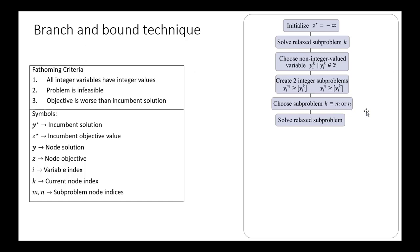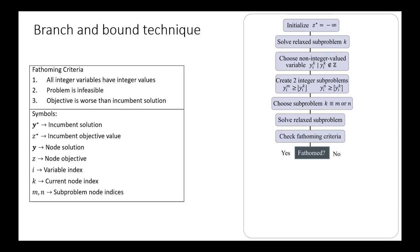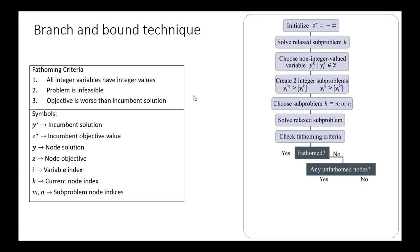We choose one of the two subproblems and then solve that. We will then check our fathoming criteria. We come over to this region here, to this list of fathoming criteria, and see if in our solutions, do they have all integer variables? Is the problem infeasible? Is the objective worse than the incumbent solution? If it is not fathomed, then we'll check and see if there are any remaining unfathomed nodes. Obviously, if we just started, there would be unfathomed nodes remaining. But as you go further in the problem, you may get to a point where you've actually explored the full tree and have fathomed all the possible branches.